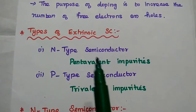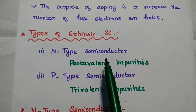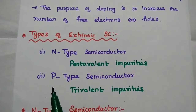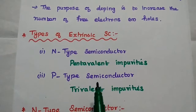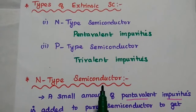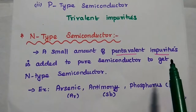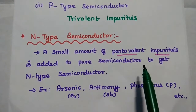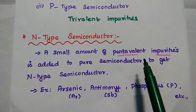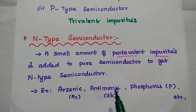There are two types of extrinsic semiconductor based on the impurity. First, N-type semiconductor — it is obtained by adding pentavalent impurities to the pure semiconductor. Second, P-type semiconductor — it is obtained by adding trivalent impurities to the pure semiconductor. Examples of pentavalent impurities are arsenic, antimony, and phosphorus.